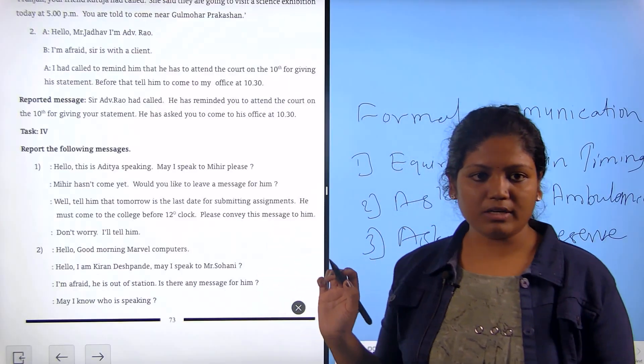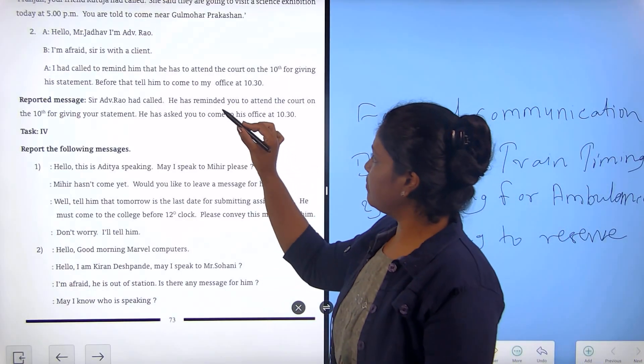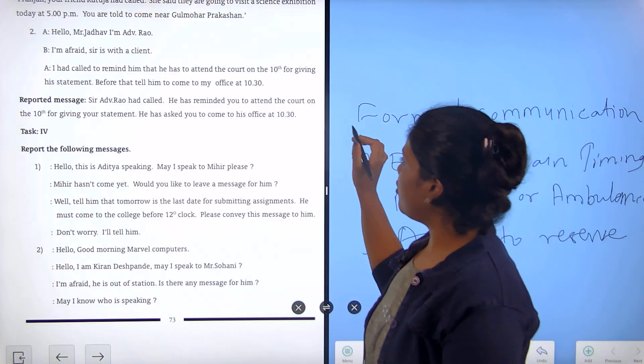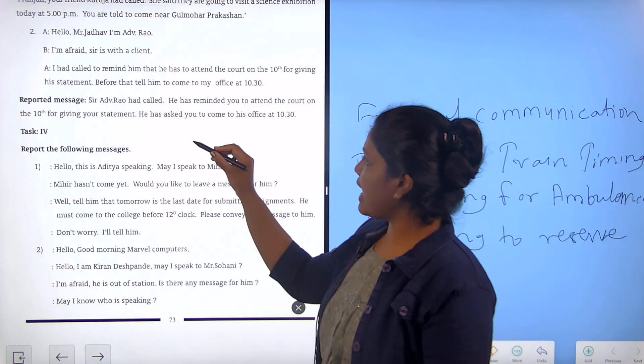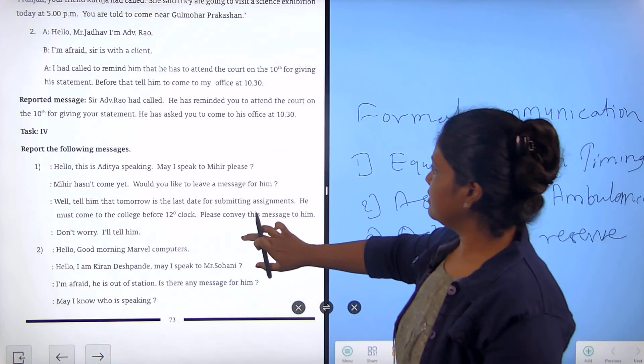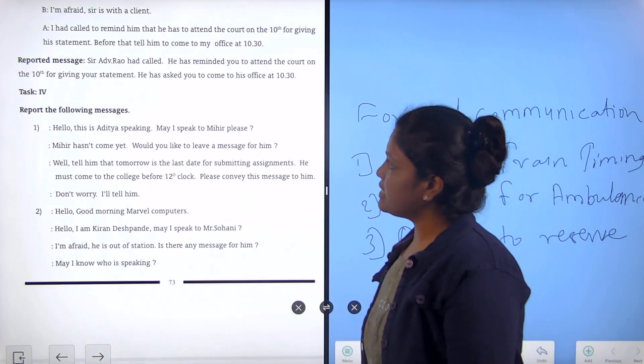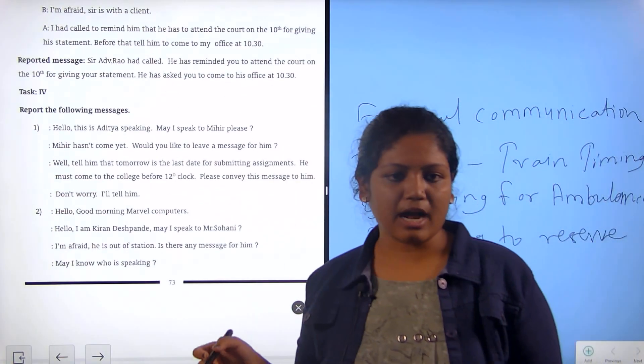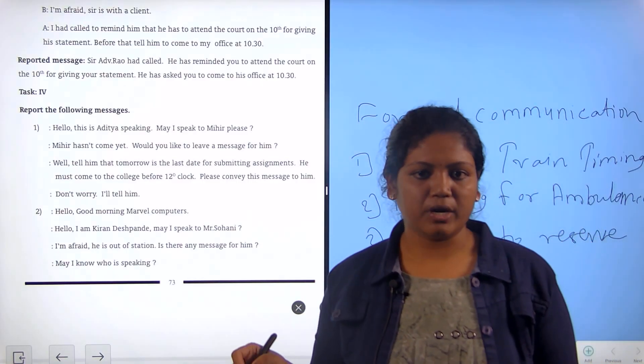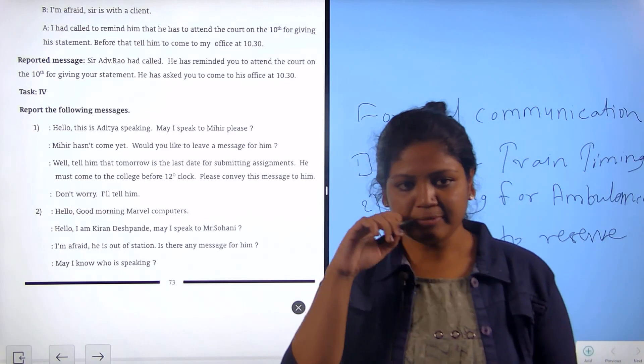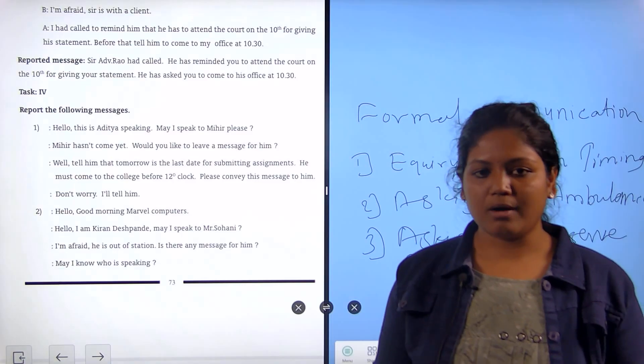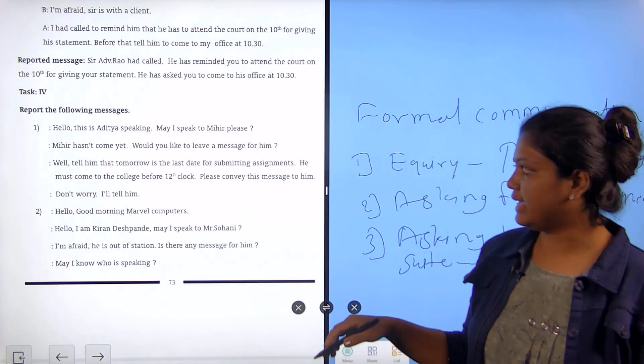The next one, hello Mr. Jado, I am advocate Rao. I'm afraid sir is with a client. I had called to remind him that he has to attend the court on the 10th for giving his statements. Before that, tell him to come to my office at 10:30. The reported message is, sir, advocate Rao had called, he has reminded you to attend the court on the 10th for giving your statement, he had asked you to come to the office at 10:30.